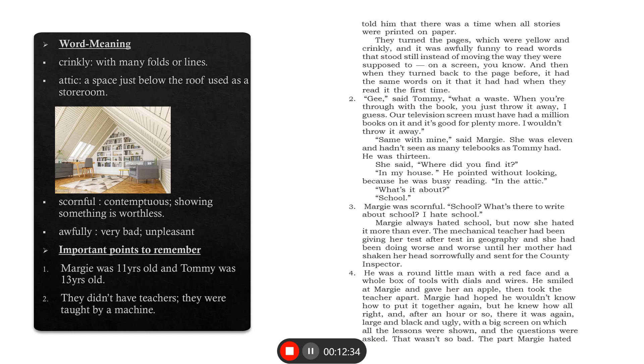Margie had hoped he wouldn't know how to put it together again, because she hates school and obviously hates the mechanical teacher too. There it was again: large, black, and ugly. What are we talking about? The mechanical teacher, with a big screen on which all the lessons were shown and the questions were asked. This mechanical teacher was black in color and had a big screen on which lessons and chapters were shown, and even whatever question the machine would like to ask, it was shown there.